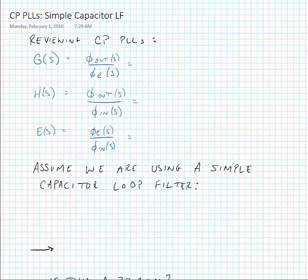We'll review the transfer functions for the charge pump PLL. We know that the open loop transfer function, phi out over phi E, was equal to KVCO times IP times F of S divided by 2 pi times S. And recall that this IP divided by 2 pi is the charge pump gain.